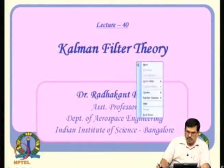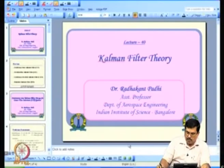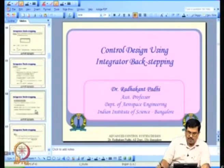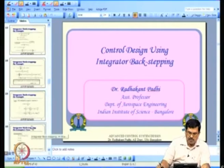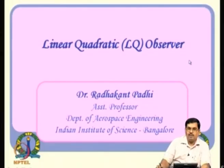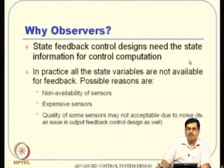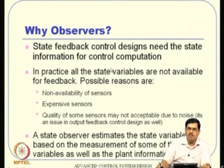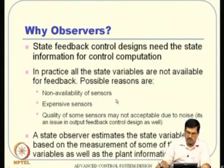Before doing that, let us go through what we discussed last time — the LQ observer. The need for an observer or estimator arises because we typically propose state feedback control design, and state information is needed for control computation. Most of the time we may not have sensor-rich systems; either the sensor is not available or it is expensive.